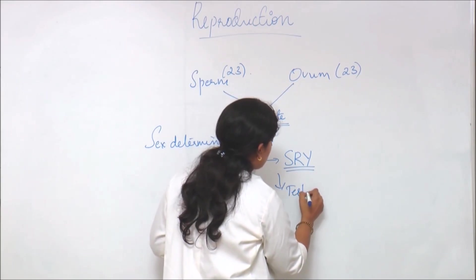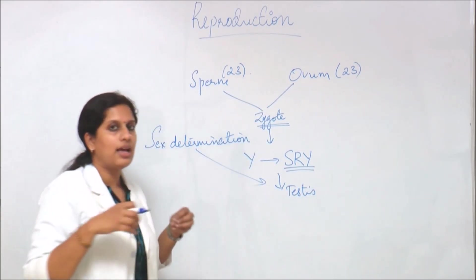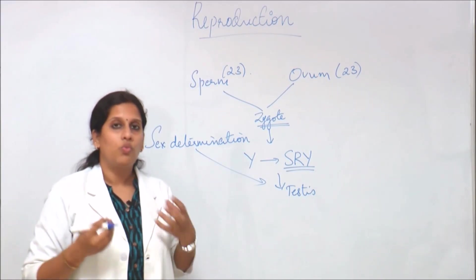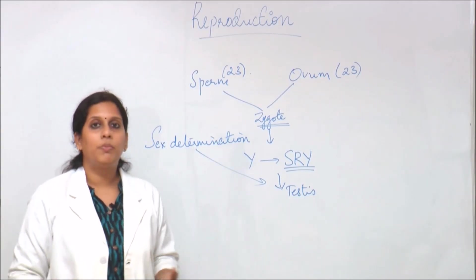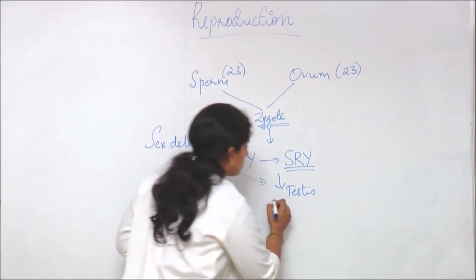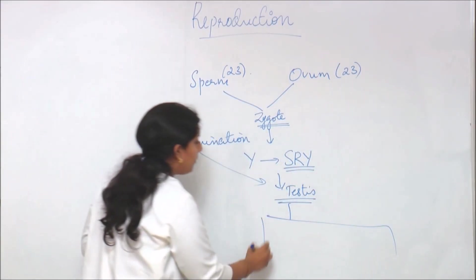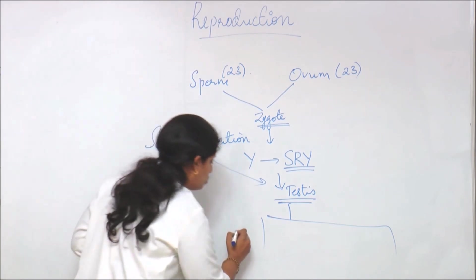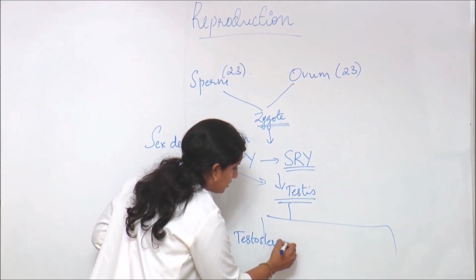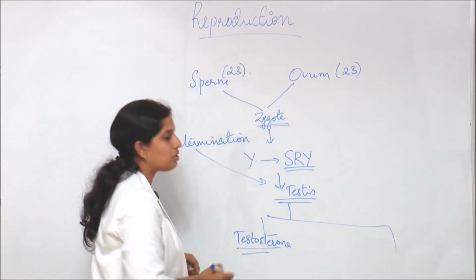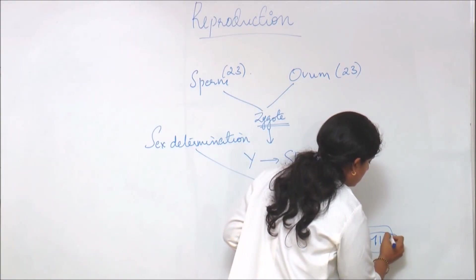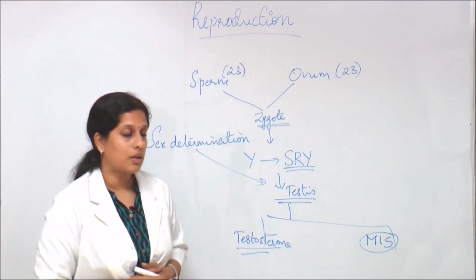The SRY gene, the sex-determining region of the Y chromosome, determines the development of the male gonad, which is the testis. From this fetal testis, two substances — two hormones — are produced. One is testosterone.